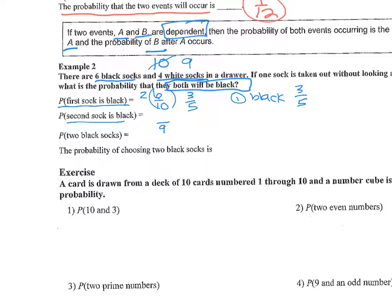For the second sock: we started with ten but took one out, so nine socks total remain — that's the new denominator. We said the first sock was black, so we had six black socks but took one out, leaving five. So the probability of the second sock being black is five over nine, which can't be simplified. Then we multiply the two probabilities together.